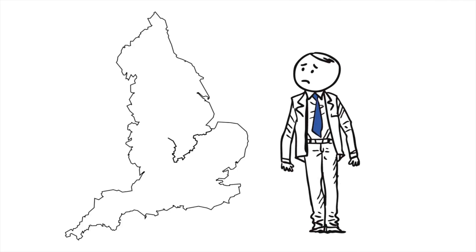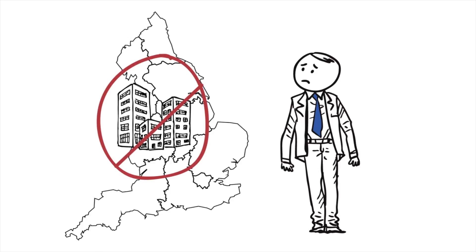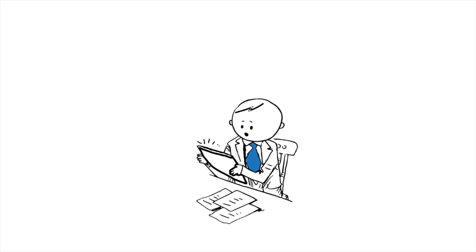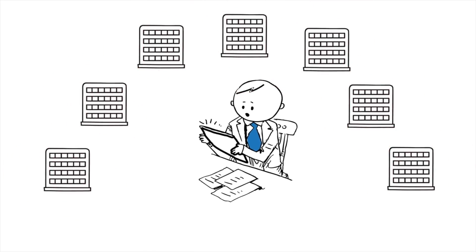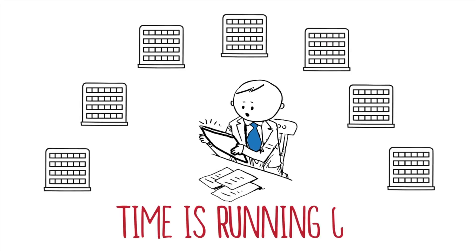Peter finds out his current vendor doesn't provide service in one of the new locations. He doesn't know who operates in Birmingham. So Peter researches it for two weeks and finds seven potential vendors. Seven potential vendors! And time is running out!